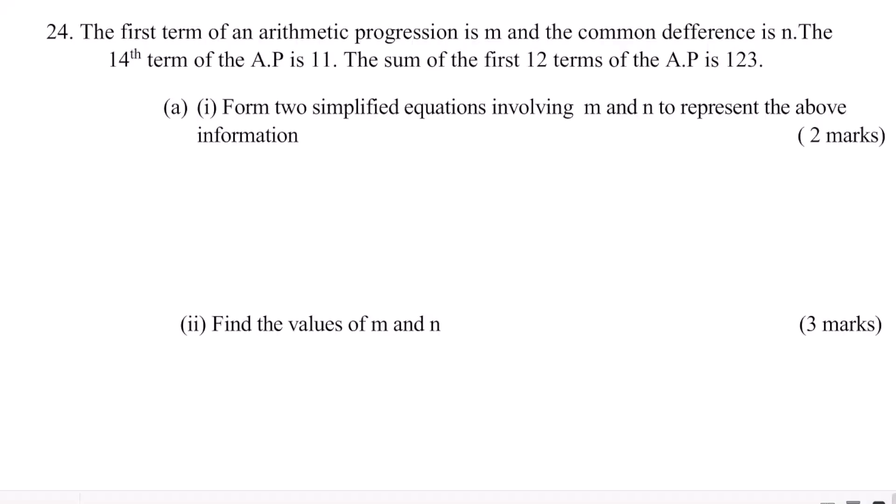Sequences and series. The first term of an arithmetic progression is M and the common difference is N. The fourteenth term of the AP is 11. The sum of the first 12 terms of the AP is 123.